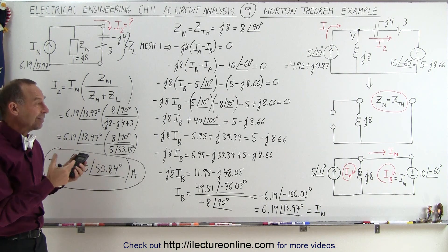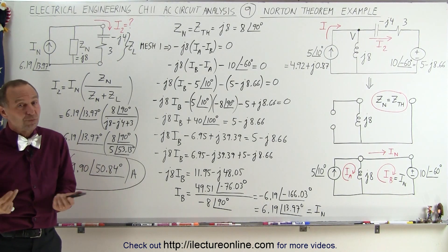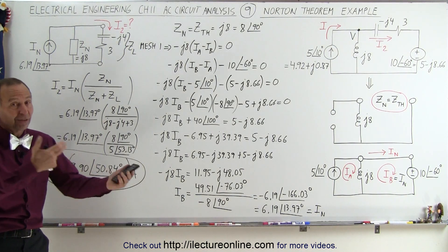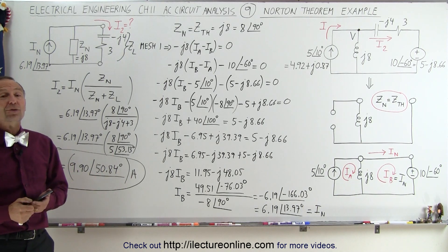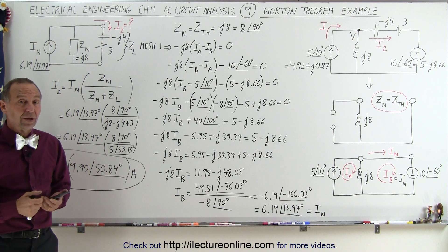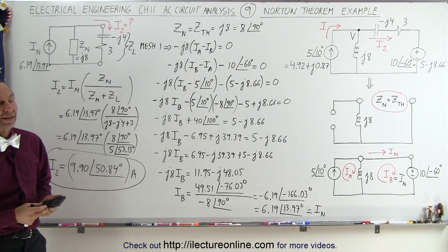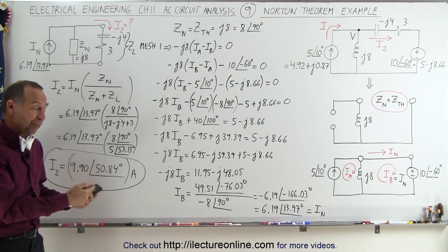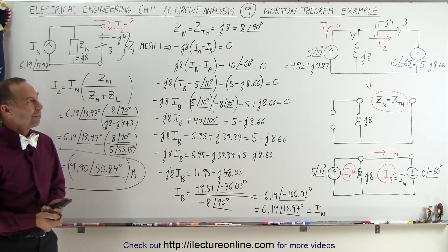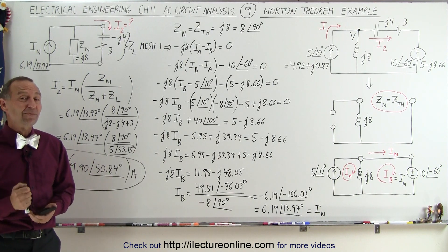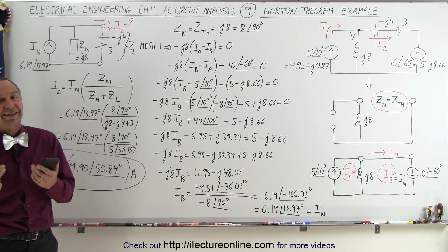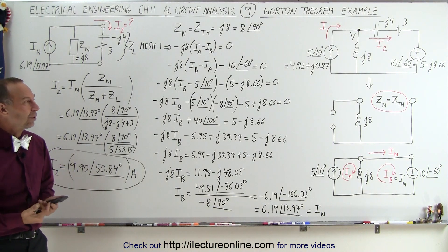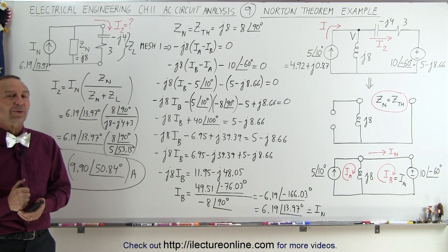Now you may say: we've seen six different methods to solve the same circuit — which method should you use? The one you like best, or the one you're told to use. Sometimes you have no choice. One thing you could do if you're taking a test and you're supposed to use a particular method but aren't sure if your answer is right: try a second method. If you get the exact same answer, then you were probably correct. We'll show additional examples of each different method, some more complicated, so you can see how each method is used for the various types of circuits we'll encounter.